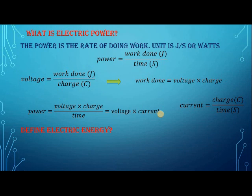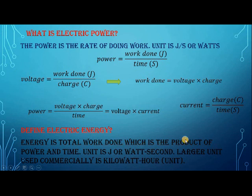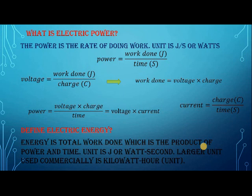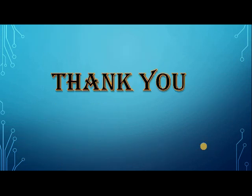Define electric energy. Energy is the total work done, which is the product of power and time: energy = power × time. Its unit is joules or watt-second. The larger unit used commercially is the kilowatt-hour. That concludes our discussion of the fundamentals of electric field and potential. A part two is coming in which we'll discuss electric field and potential in detail. Thank you for watching.